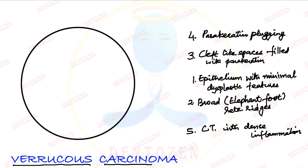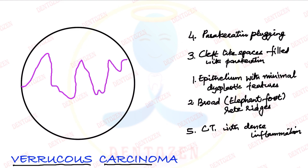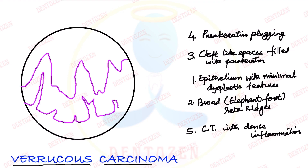Now let's draw these pictures. We have to draw an epithelium that is growing upwards as well as downwards — both exophytic, growing upwards like blunt projections, as well as growing downwards. The shape of the rete ridges is broad — that is very important to take care of while drawing this diagram. The rete ridges have to be broad. The epithelium is showing minimal dysplasia with a basal cell layer.